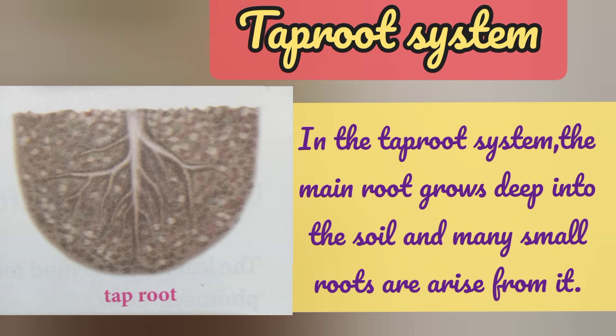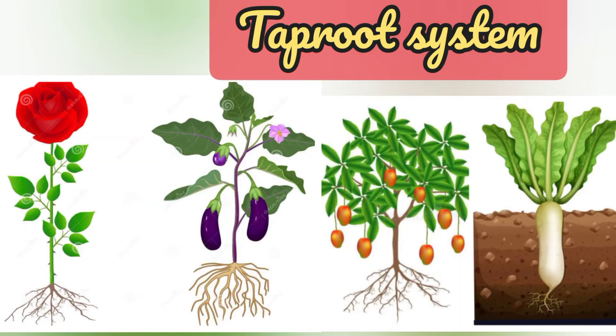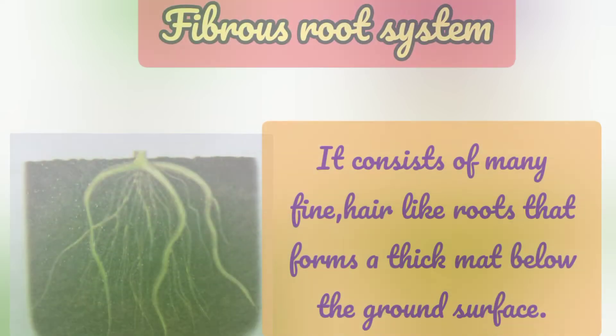In the tap root system, the main root grows deep into the soil and many small roots arise from it. Plants such as rose, brinjal, mango, and radish have a tap root system.